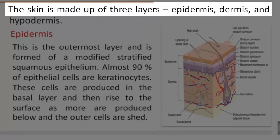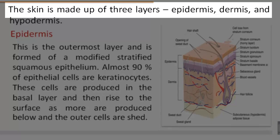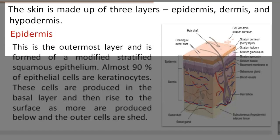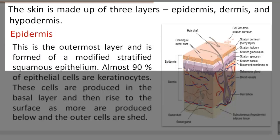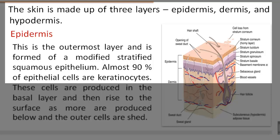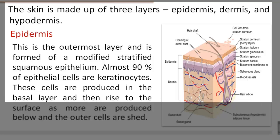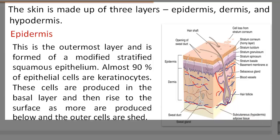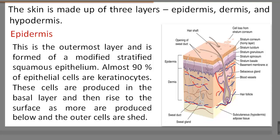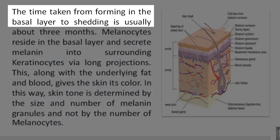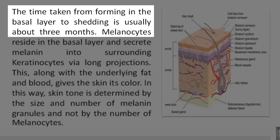The skin is made up of three layers: epidermis, dermis, and hypodermis. Epidermis: This is the outermost layer and is formed of a modified stratified squamous epithelium. Almost 90% of epithelial cells are keratinocytes. These cells are produced in the basal layer and then rise to the surface as more are produced below and the outer cells are shed.